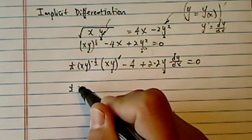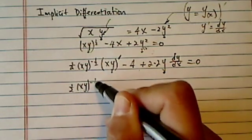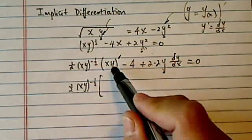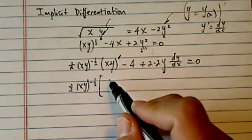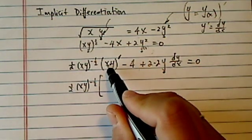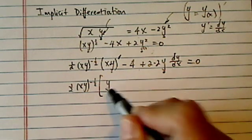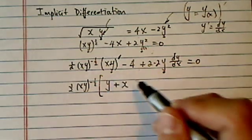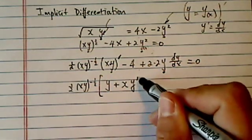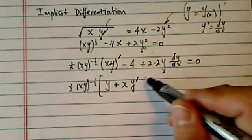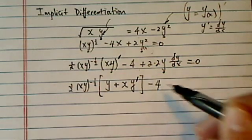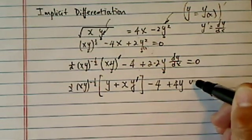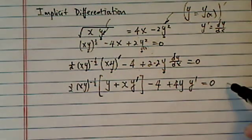xy to the minus half, now derivative of this one, we have to use chain rule here. Derivative of the first term is 1, leave the second one alone, plus leave the first one alone, derivative of the second one is y prime, which is dy/dx really, minus 4, plus 4y y prime equal to 0.